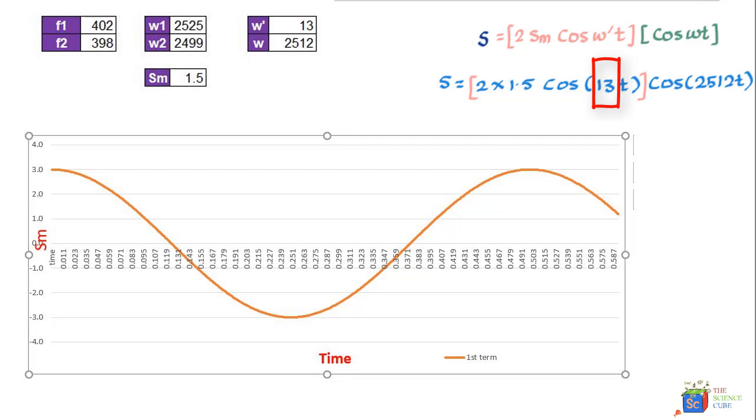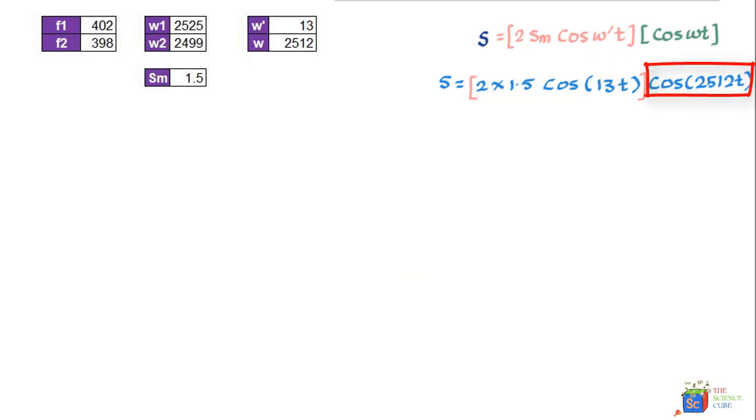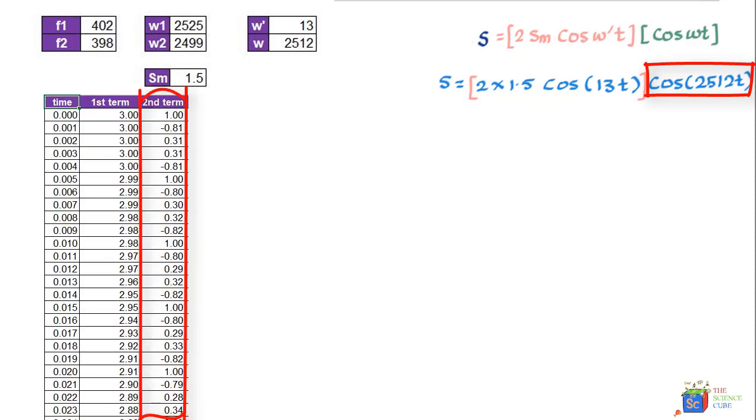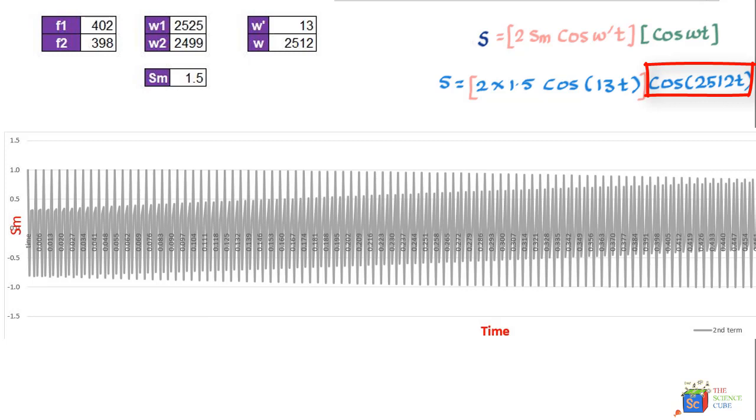Now let us take this part and tabulate its values with time, and this is what you get. If you plot these values against time, what you get is this graph. If you are surprised to see the crazy zigzag, you should not be since the frequency here is so high at 398 plus 402 divided by 2, that is 400 hertz, that the number of vibrations happening per second is really high.